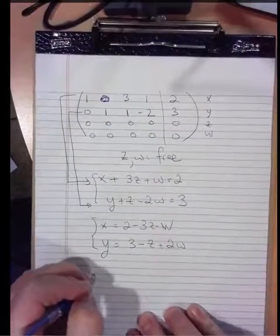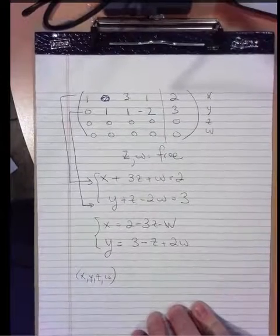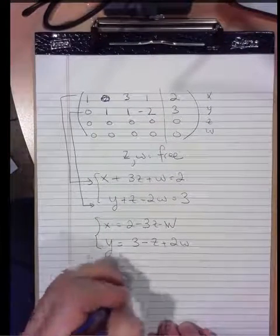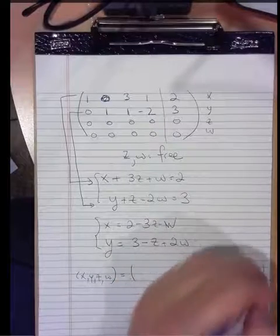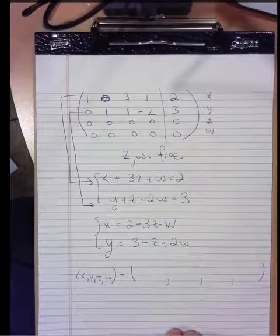We're looking for unknowns x, y, z, and w. We're not going to find unique solutions. We're going to find infinitely many. There's the setup for the four spots.